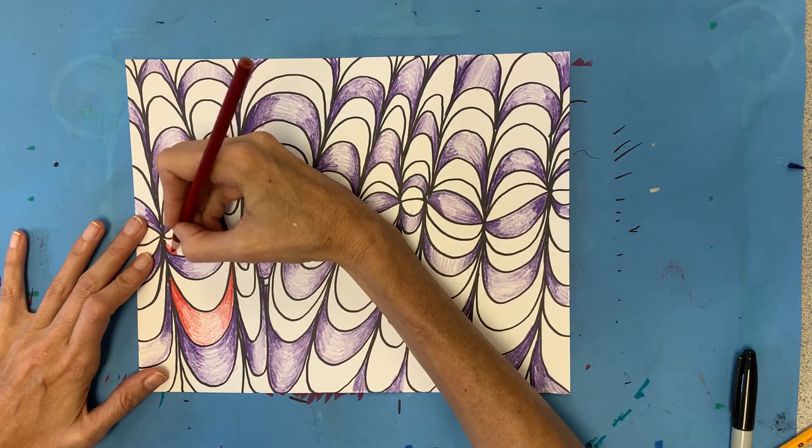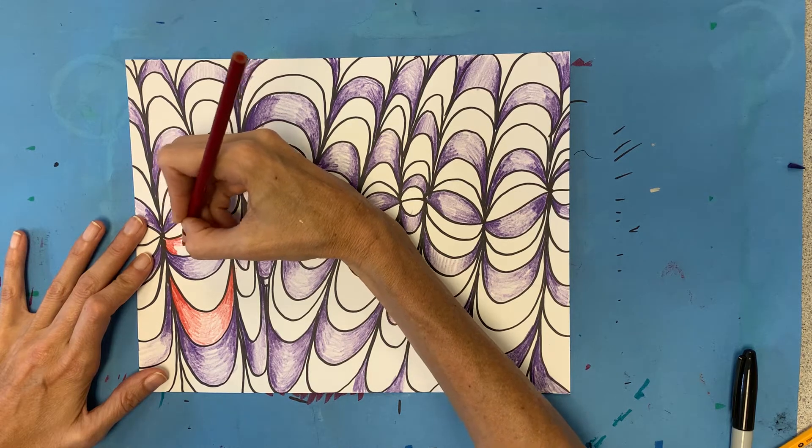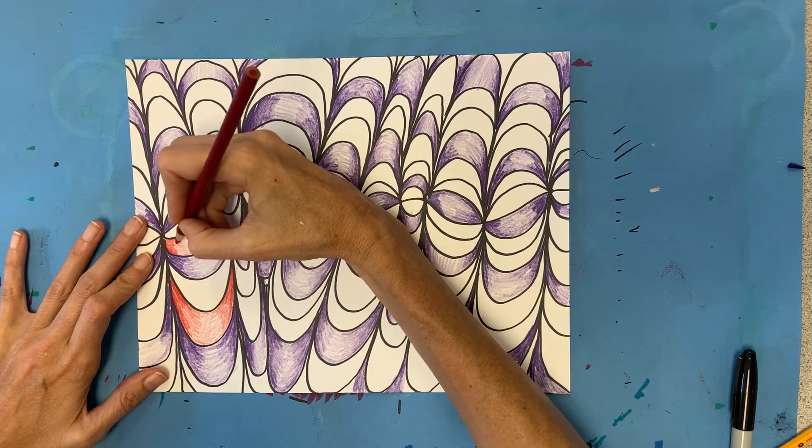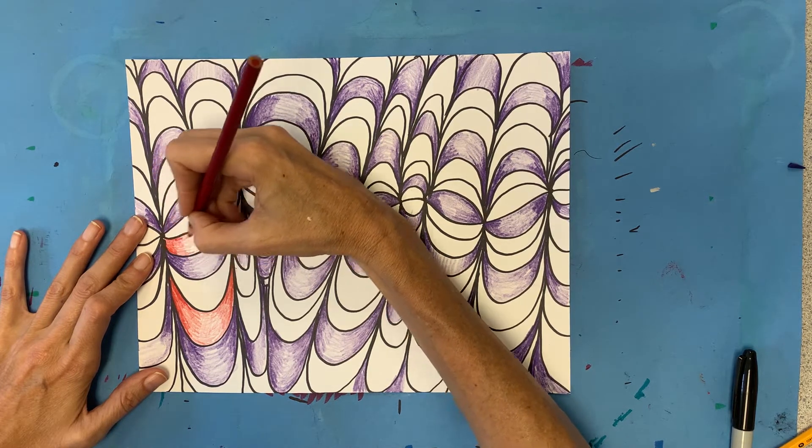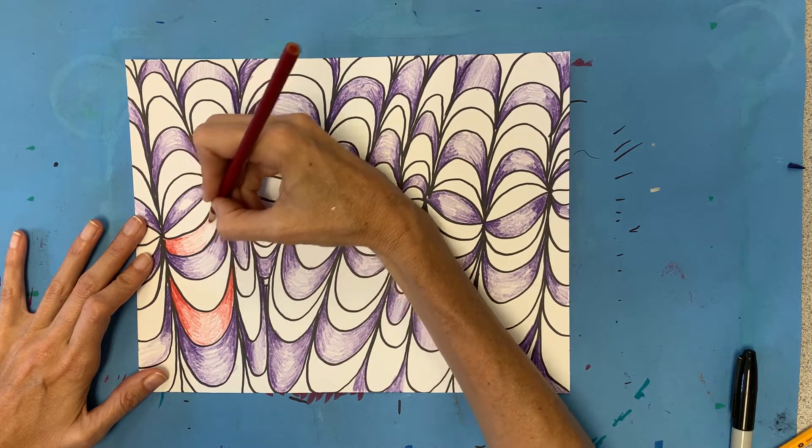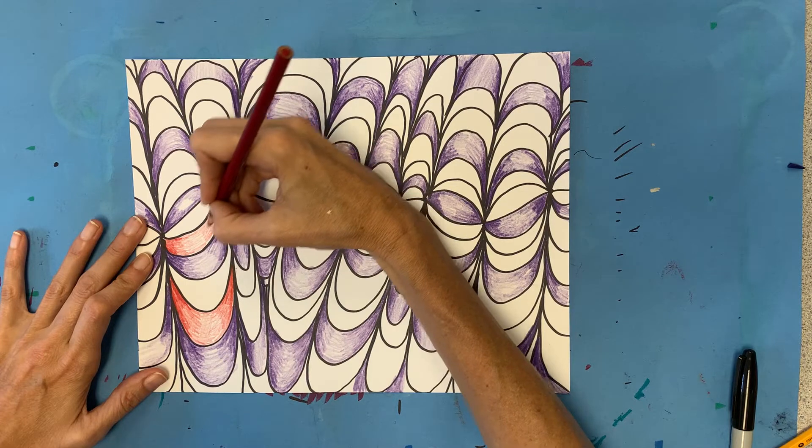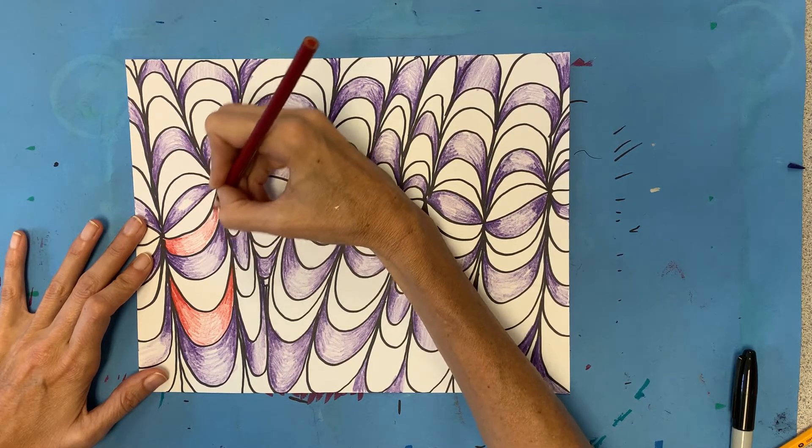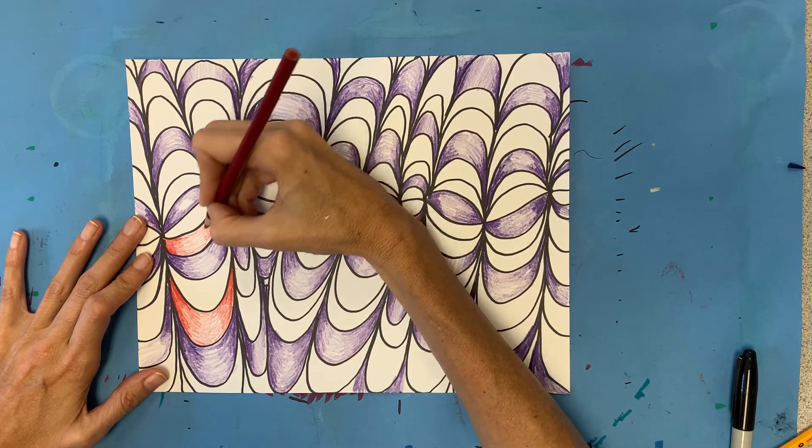All right next on top of this next purple one same thing I've got my dark red I've got my medium red I'm gonna get very very light pressing lightly. Now I'm gonna press a little bit heavier so it looks medium and now I'm going to press heavy so it looks dark.